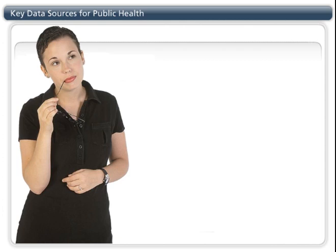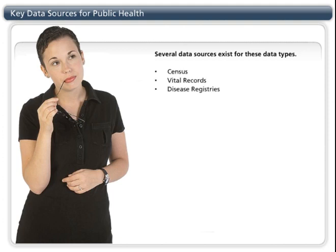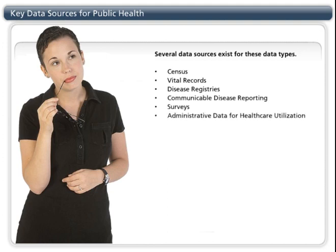Several data sources exist for these data types. Some of the key sources include census, vital records, disease registries, communicable disease reporting, surveys, and healthcare utilization administrative data. I'll now describe these sources and provide some key information toward using them in public health practice.